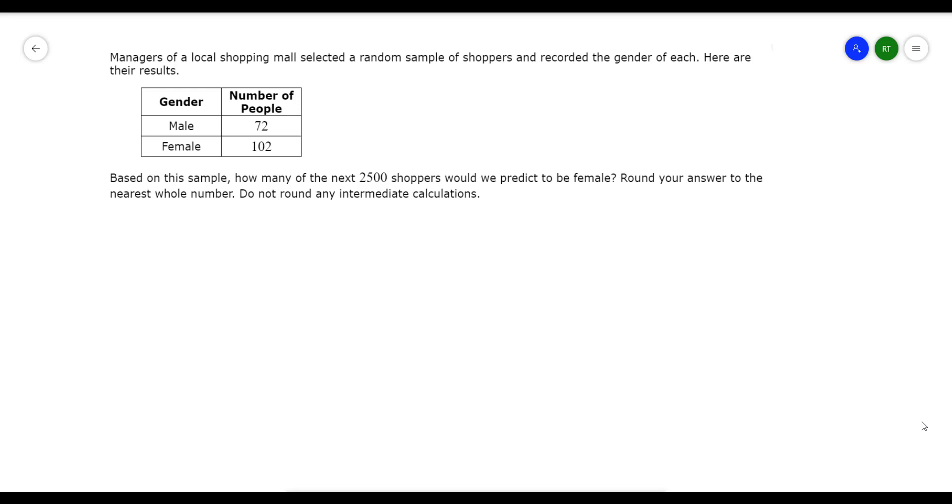Here they're asking us to make a prediction based on some data they already gave us. So let's just get started so we can see how to do it. Here it says managers of a local shopping mall selected a random sample of shoppers and recorded the gender of each. Here are the results. They found out that 72 people were male and 102 were female.